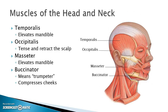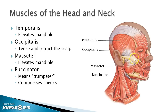If we turn the head to the side, we see the temporalis muscle covering the temporal bone. It kind of goes behind the zygomatic arch and attaches to the mandible. So when the temporalis muscle contracts, it elevates the mandible.